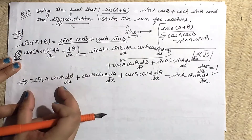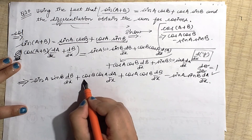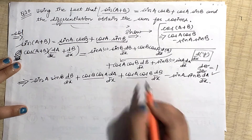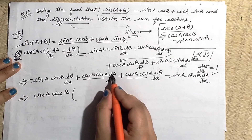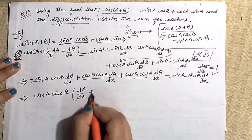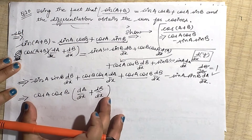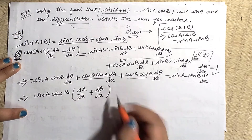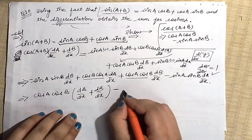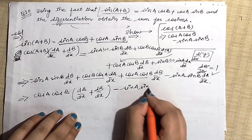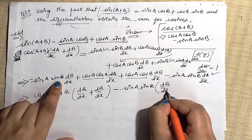Now look carefully. On the right hand side, cosA cosB appears as a common factor. Taking cosA cosB common, what remains inside is da/dx + db/dx. Similarly, there is a minus sign, and sinA sinB is common. Taking minus sinA sinB common, the values inside are positive because minus is already outside, giving da/dx + db/dx again.